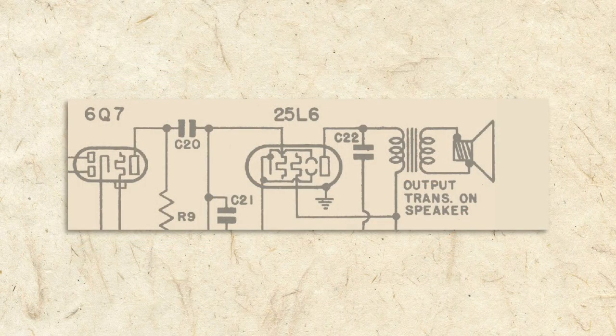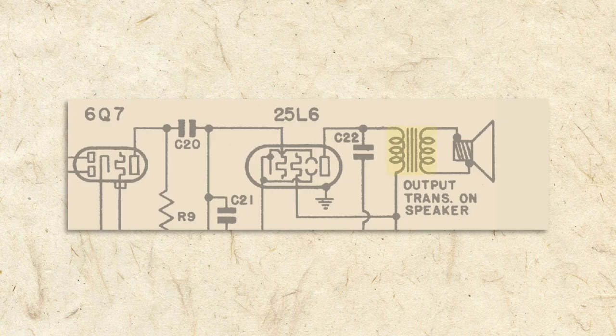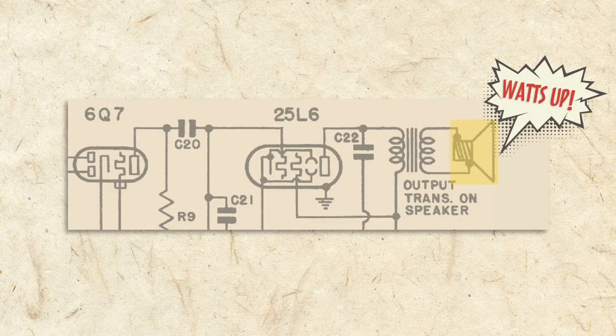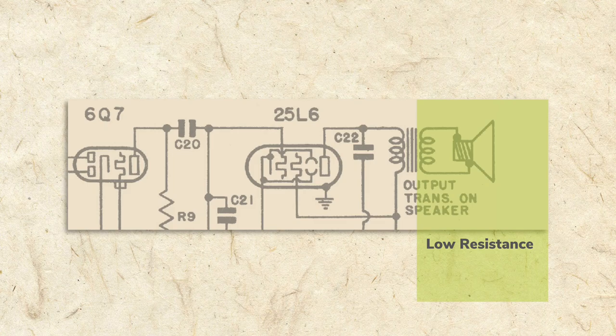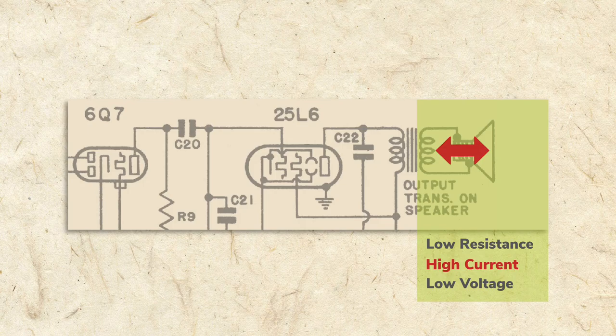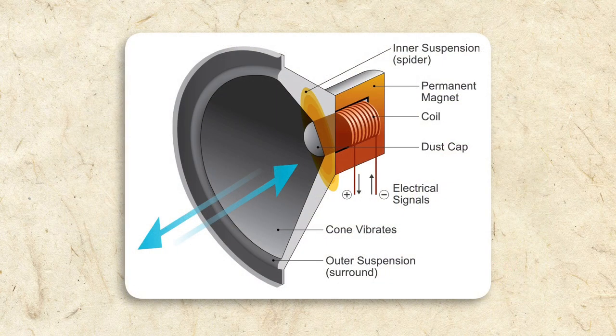Looking at a close-up of the schematic, the transformer is represented here and the speaker here. I told you earlier that this speaker requires higher wattage, not high voltage. This is because a speaker has low resistance but requires high current. High voltage is not required to push through the low resistance coil, but high current is required to get the voice coil to move. I'll explain more about how the voice coil and speaker work in the next section.